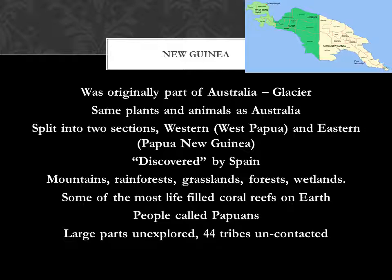New Guinea. This was actually part of Australia a long, long time ago. A glacier came and slowly carved its way across Australia, digging a deep, deep hole. Then when the world got warmer, the ocean levels rose, that deep hole was filled with water, and that made New Guinea an island. It's a very unusual way to make an island.